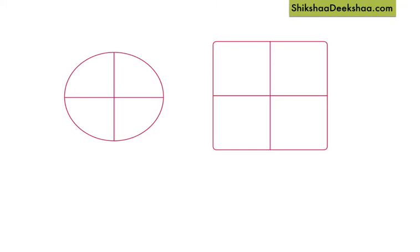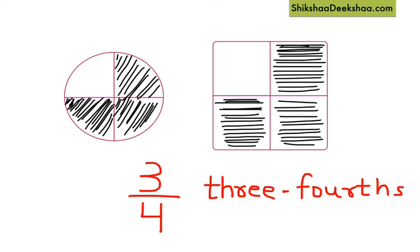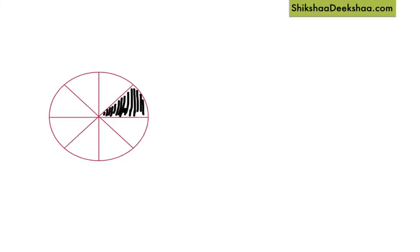We call this fraction one by four. Now if I have a whole and divide it into four parts — one, two, three, four — and I shade the part I want to eat, what would be the fraction of the shaded part? Total number of parts are four, so I write four at the bottom. The number of shaded parts is three, so I write three at the top. The fraction for the shaded part is three by four, or three-fourths.